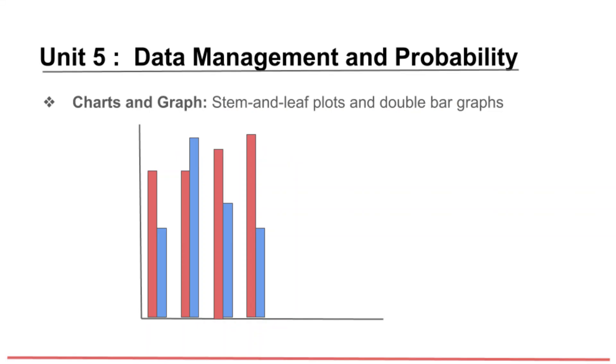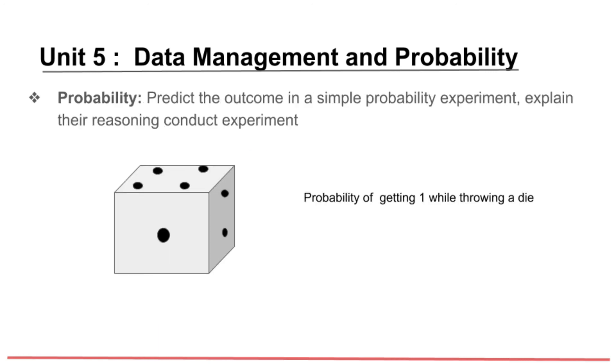The last unit in Grade 4 is Data Management and Probability. In this unit, students organize discrete primary data and display the data in charts, tables, and graphs. In Probability, students predict the frequency of an outcome in a simple probability experiment.